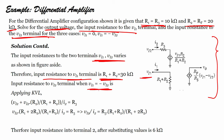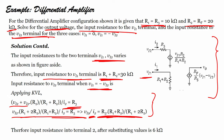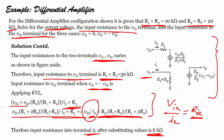For the input resistance to terminal Vi2 when V1 equals minus Vi2 — if we apply Kirchhoff's voltage law — we find that Vi2/I2 gives us the input resistance to terminal 2. Substituting the values, the input resistance to terminal Vi2 is 6 kilo-ohms. This is how we solve the problem for the differential amplifier.